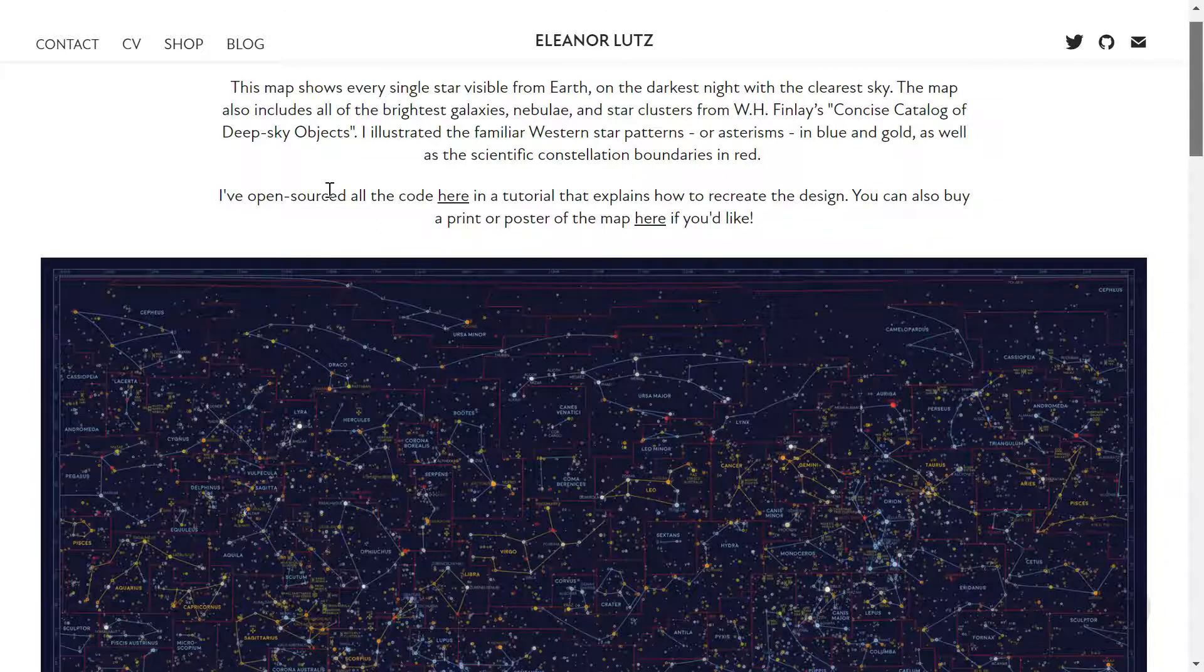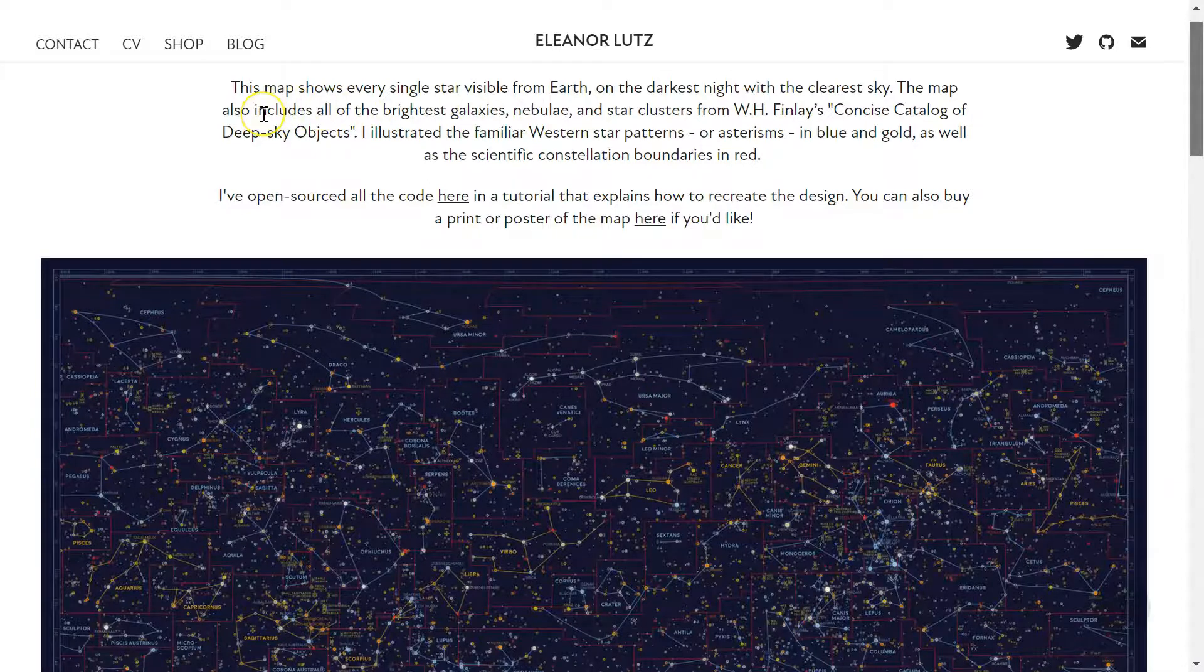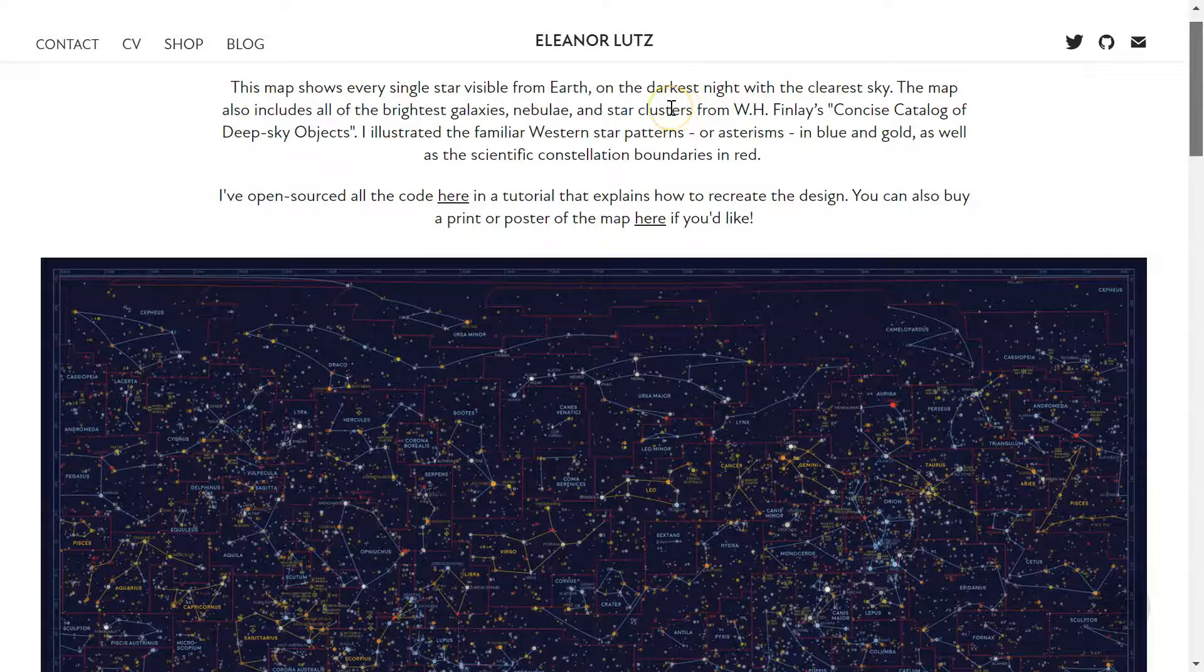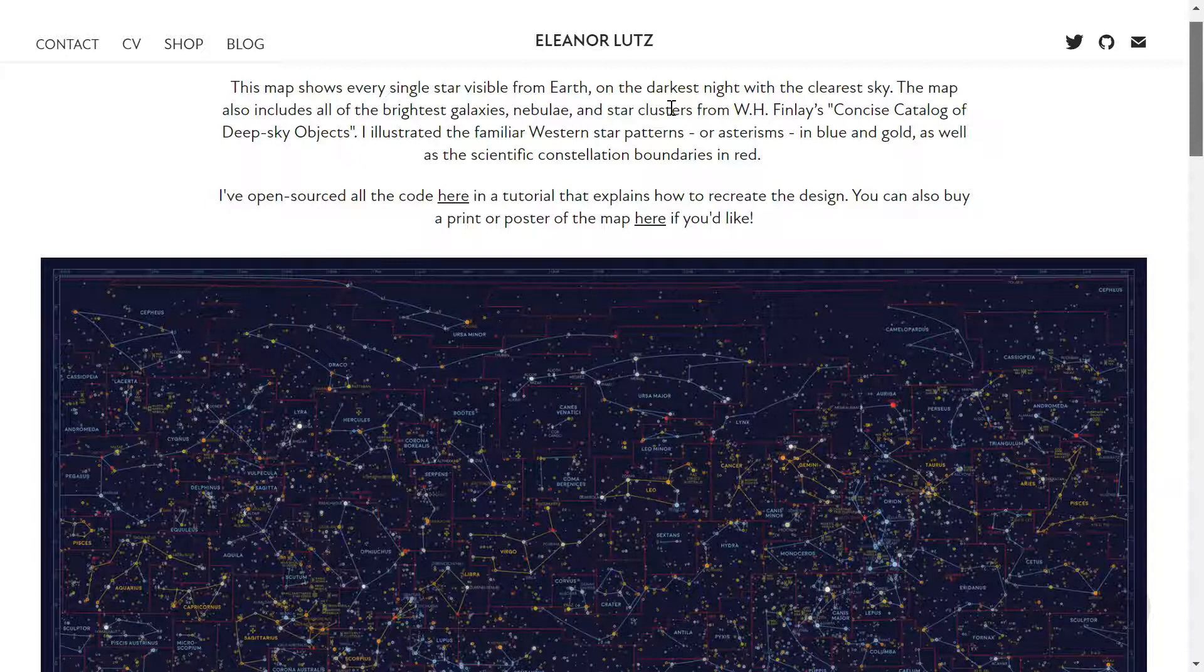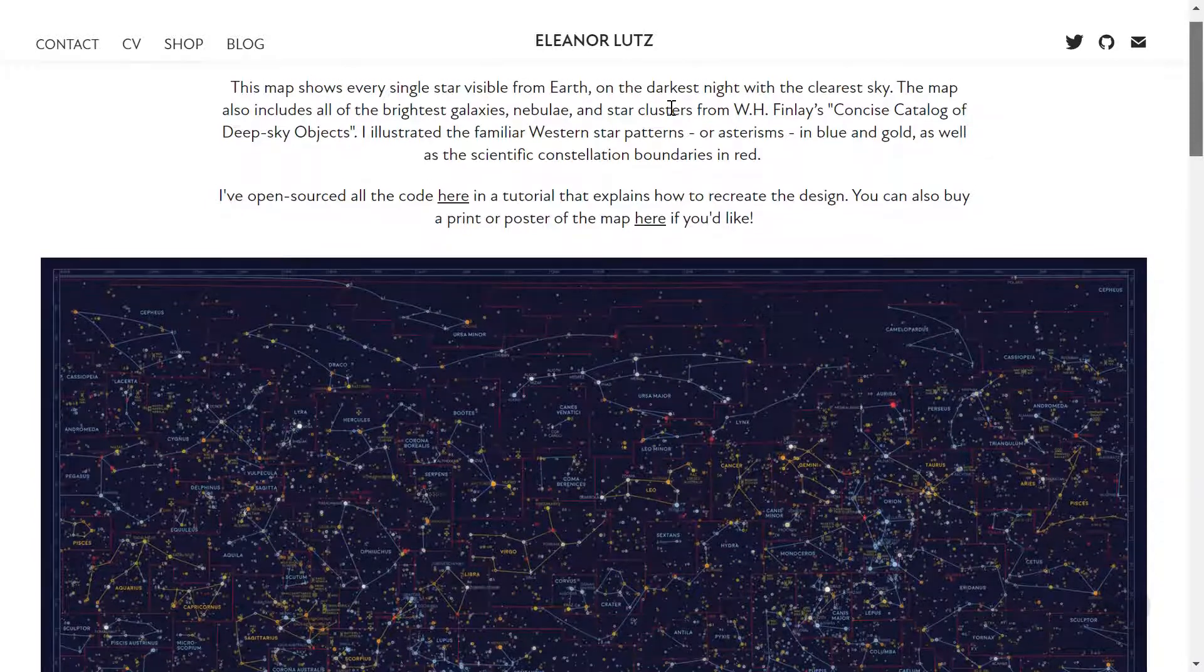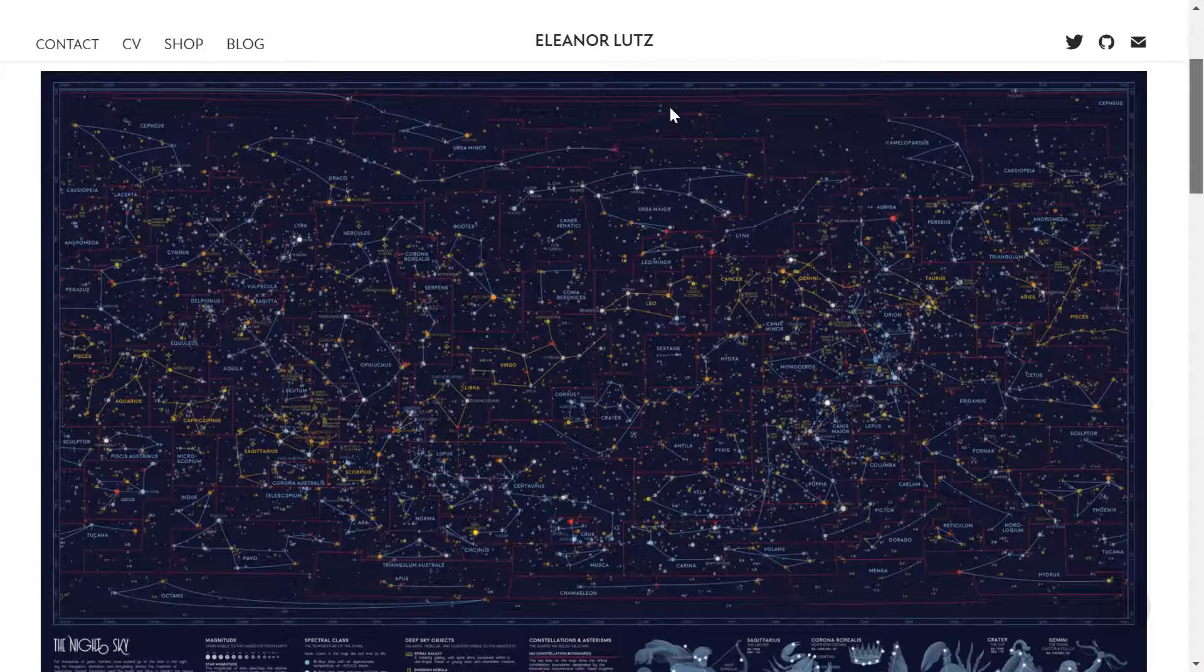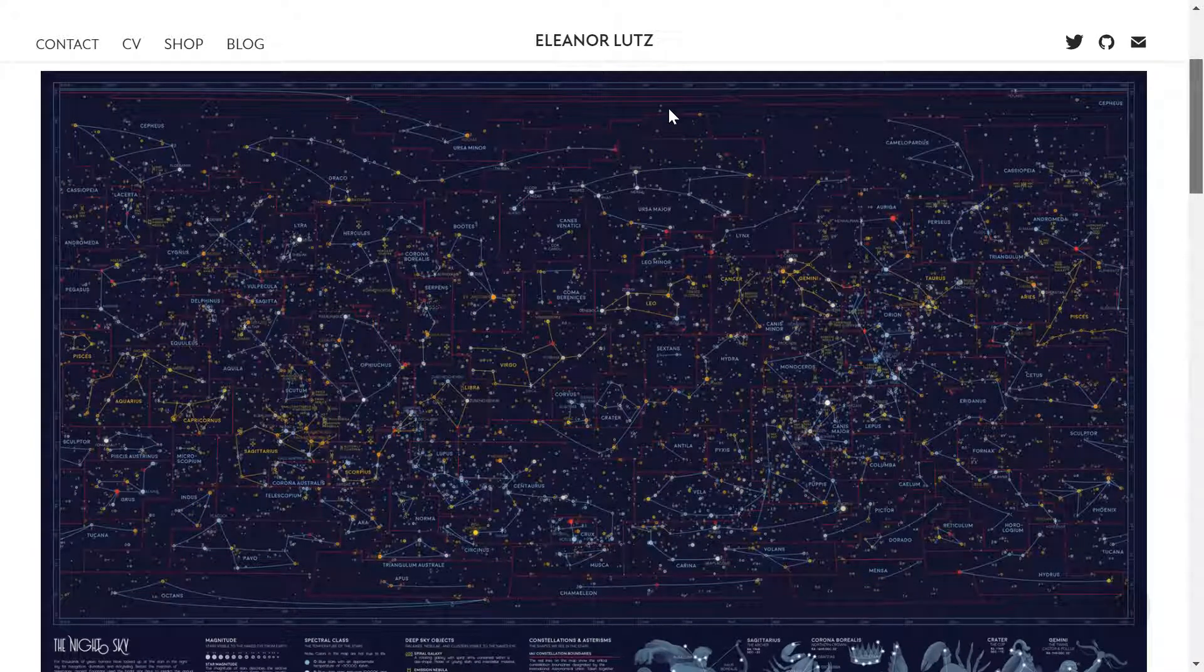This map shows every single star visible from Earth, on the darkest night, with the clearest sky. The map also includes all of the brightest galaxies, nebulae, and star clusters. There's a bunch of other information in this graph, or this picture.